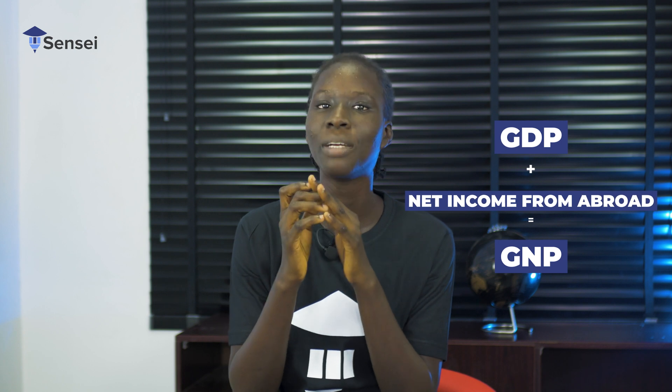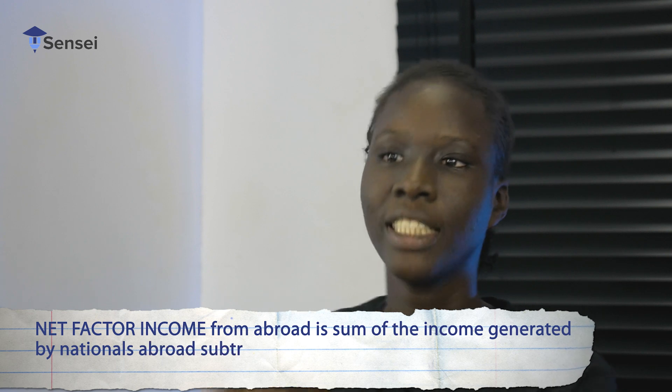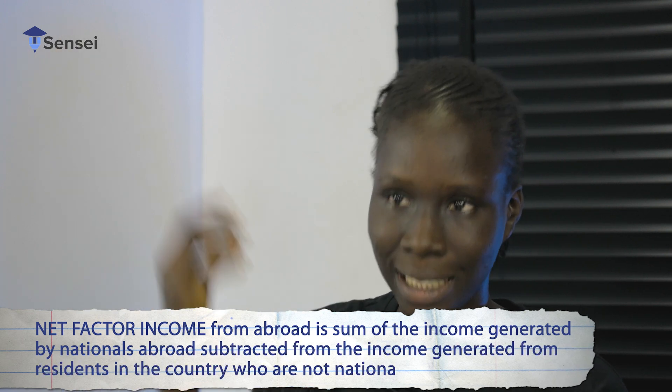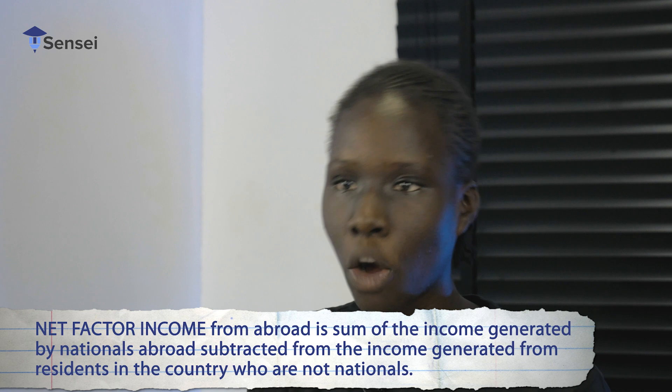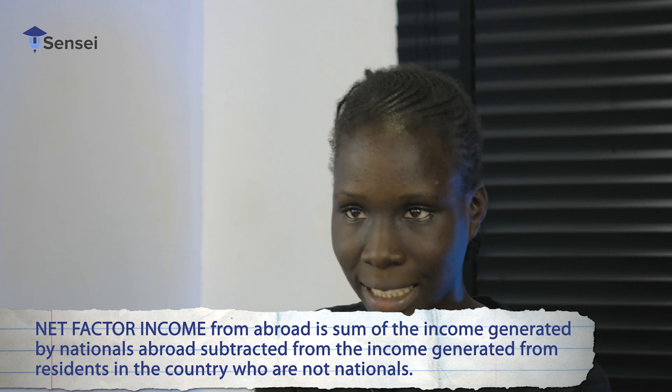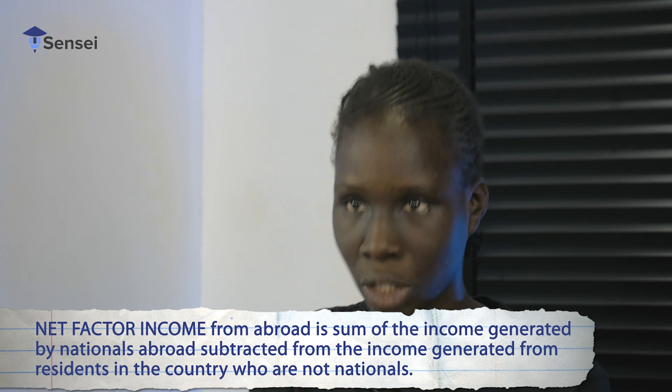GDP is by all the residents in the country. So to factor out those that are not nationals but are residents in the country, we calculate the net factor income from abroad, which we add to GDP to get GNP. The net factor income from abroad is the income generated by nationals that are abroad, minus the income generated by residents in your country who are not nationals of your country.